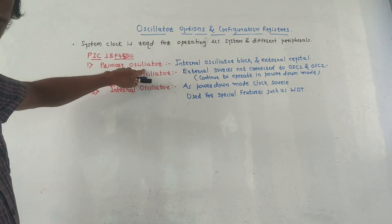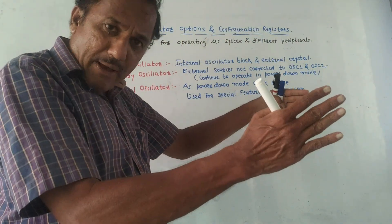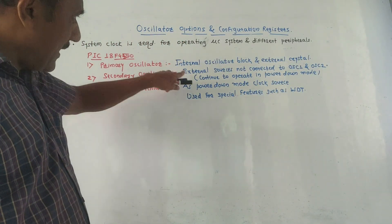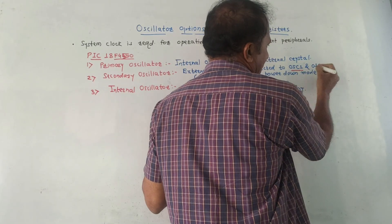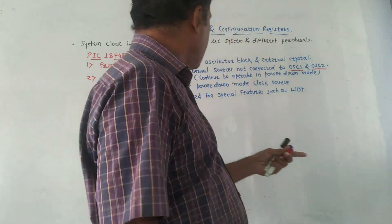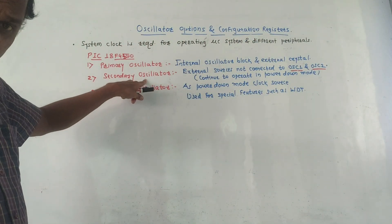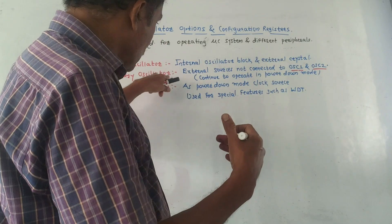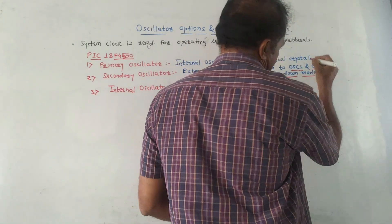First is the primary oscillator — it contains an internal oscillator block which is inside the microcontroller, and an external crystal. Second is the secondary oscillator. Here, external sources are not connected to pins OSC1 and OSC2, which are the pins of the microcontroller related to oscillators. If the microcontroller is making use of the secondary oscillator, this oscillator mode continues to operate even if the microcontroller is in power-down mode.